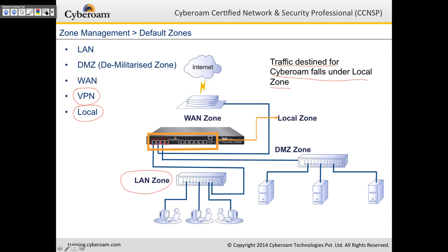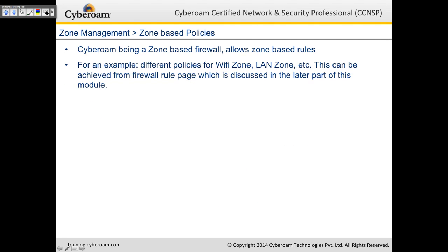For example, if you want to access CyberROM from the WAN interface restricted to your home static IP address, you create a firewall rule from WAN to local — the WAN port — and restrict access only from your home IP. CyberROM also offers zone-based policies; being a zone-based firewall, you can have different policies for a WiFi zone, LAN zone, etc., configured from the firewall rule page.